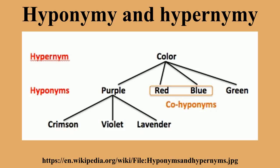Hyponymy is a transitive relation. If x is a hyponym of y, and y is a hyponym of z, then x is a hyponym of z. For example, violet is a hyponym of purple and purple is a hyponym of color. Therefore violet is a hyponym of color.